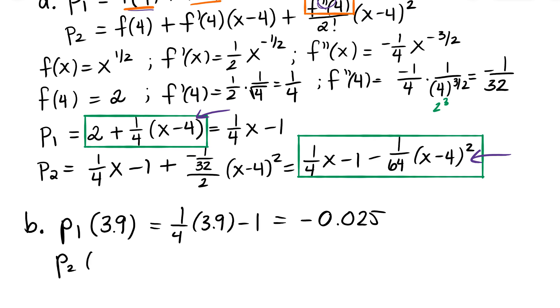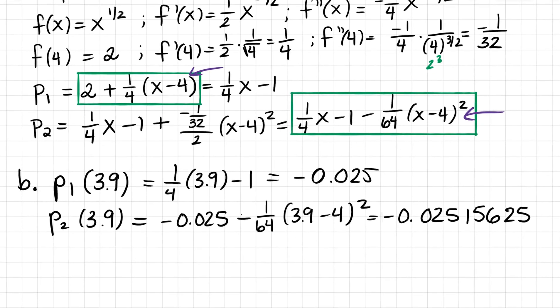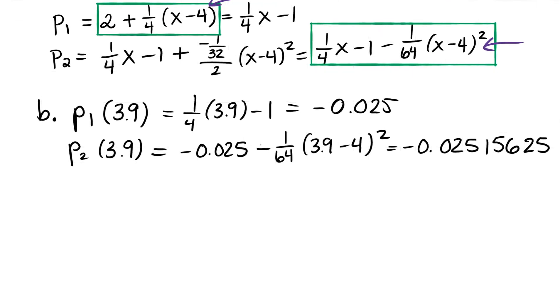If I put that into P sub 2, into that 3.9, remember I know it's going to be P sub 1, plus the other stuff, which is negative one sixty-fourth, 3.9 minus 4 quantity squared. And we get negative 0.0251565. I'm going to go out pretty far because I want to show you the error here. So that is using the linear approximation and the quadratic approximation to approximate the square root of 3.9.